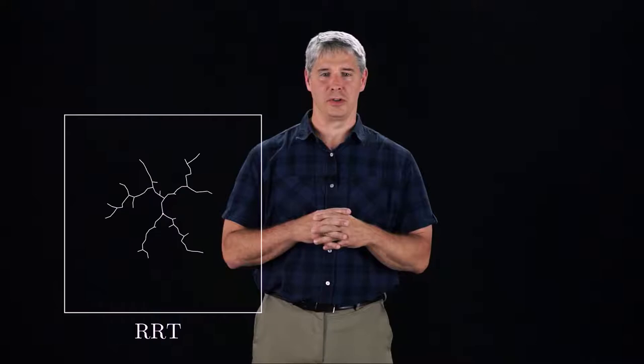This video shows an RRT generated for a two-dimensional space. Samples are chosen uniformly randomly from the space, and the motion planner from the nearest node goes directly toward the sampled node, up to a maximum step size. The randomly chosen samples pull the tree to explore the state space.